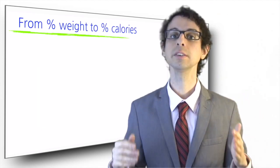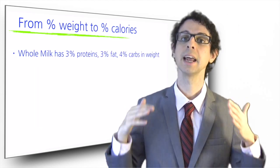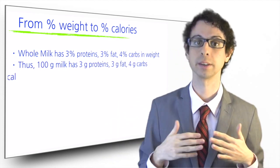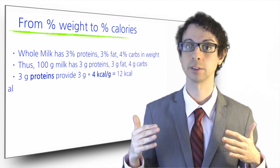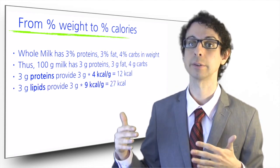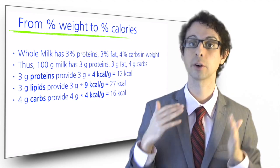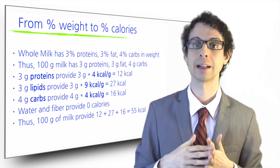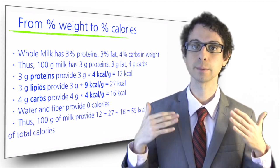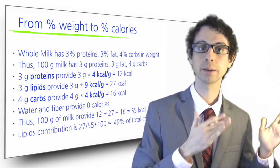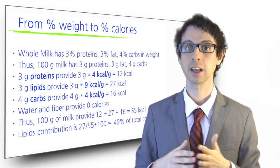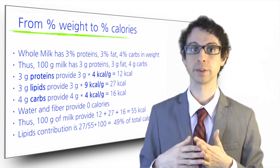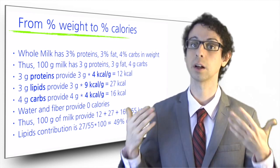How did we calculate that? If we consider 100 grams of milk, it has 3 grams of proteins times 4 calories per gram, so 12 calories from proteins. Then 3 grams of lipids times 9 calories per gram, so 27 calories from lipids. And then 4 grams of carbs times 4 calories per gram, so 16 calories from carbs. Water, of course, provides no calories. 12 plus 27 plus 16 is 55 calories, so 100 grams of milk provide 55 calories. 27 of these calories come from lipids — in percent, this is 27 divided by 55 times 100, so 49%, which is almost half.